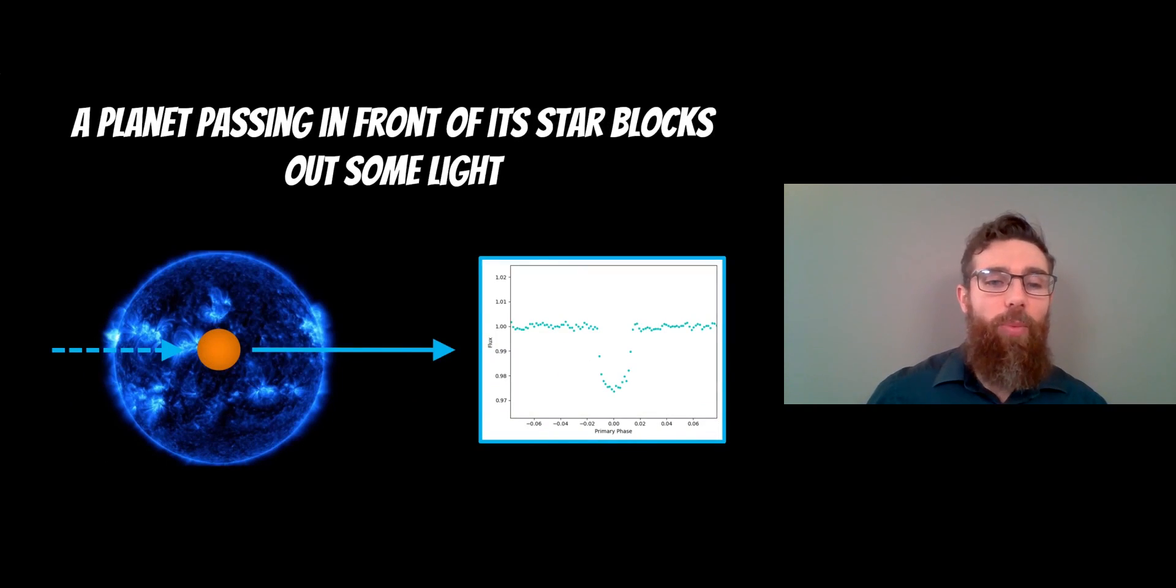As we're probably aware, a transiting exoplanet is discovered when it passes in front of the star. You then get this characteristic dip in brightness as it blocks some of the light from the star, and that is how these transiting exoplanets are discovered.